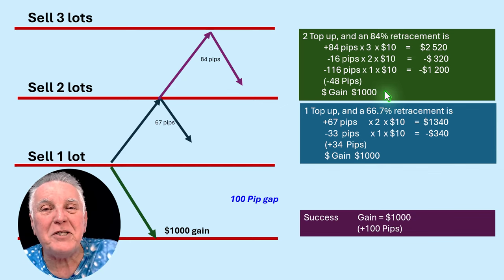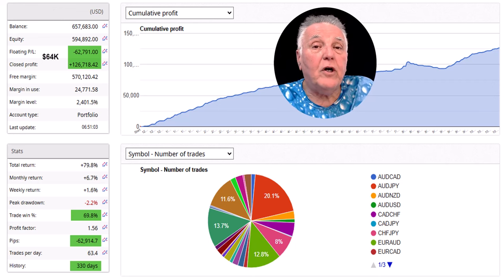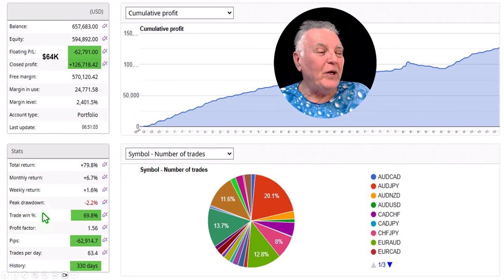And that is how this particular account on your screen, and there are many of them that I can show you, has reached a point where it has made minus 62,000 pips.